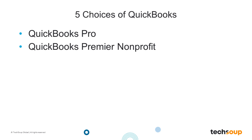The second option — what most people have and what's available at the TechSoup website — is QuickBooks Premier Nonprofit. This is basically QuickBooks Pro with a couple of extra things. The retail price of QuickBooks Premier is around $475, but you can get it for $50 at TechSoup. That's amazing.